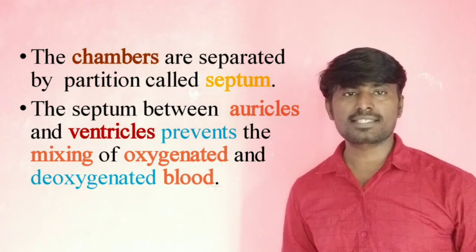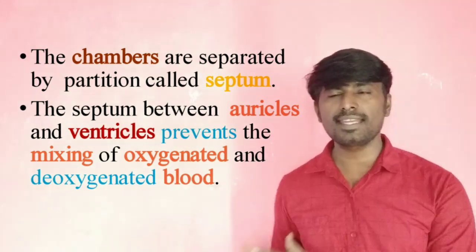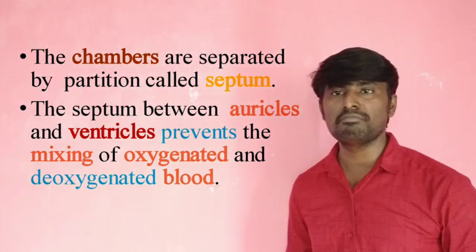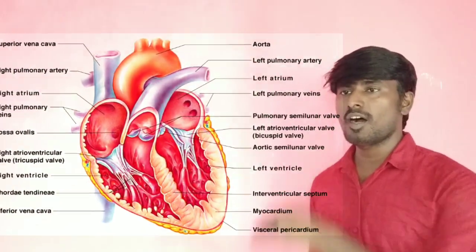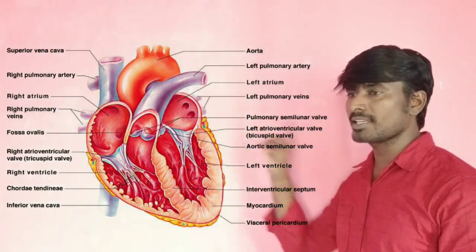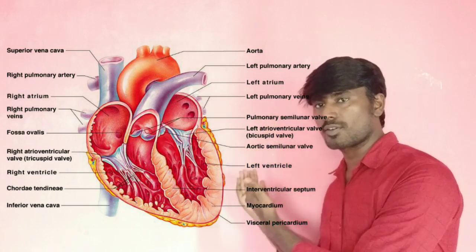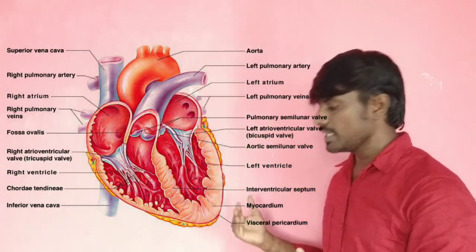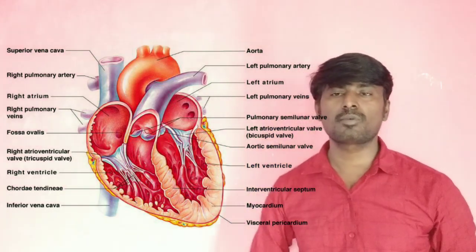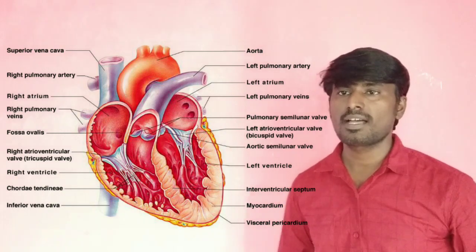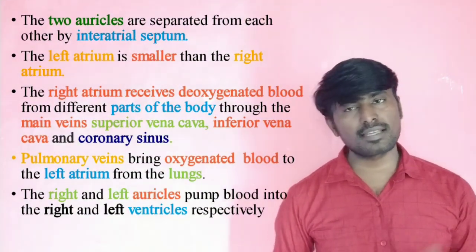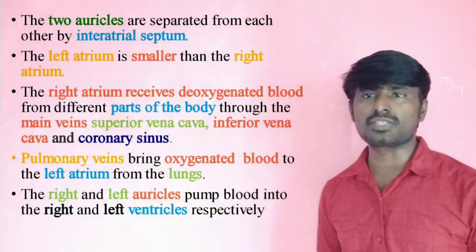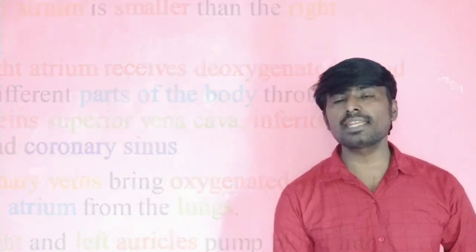The septum, which is present between the auricles and ventricles, prevents the mixing of oxygenated and deoxygenated blood. There are 2 auricles and 2 ventricles separated by the septum, which keeps oxygenated and deoxygenated blood from mixing.